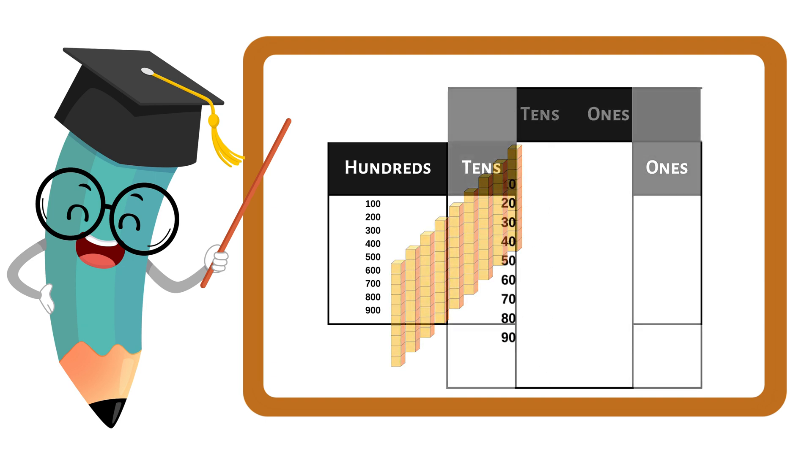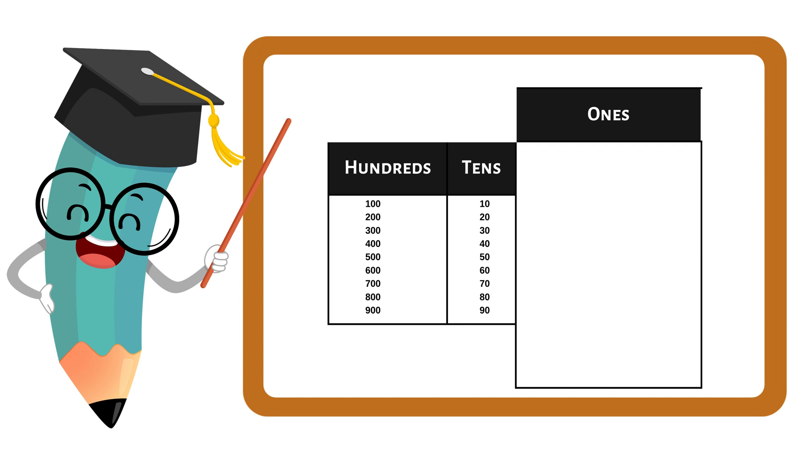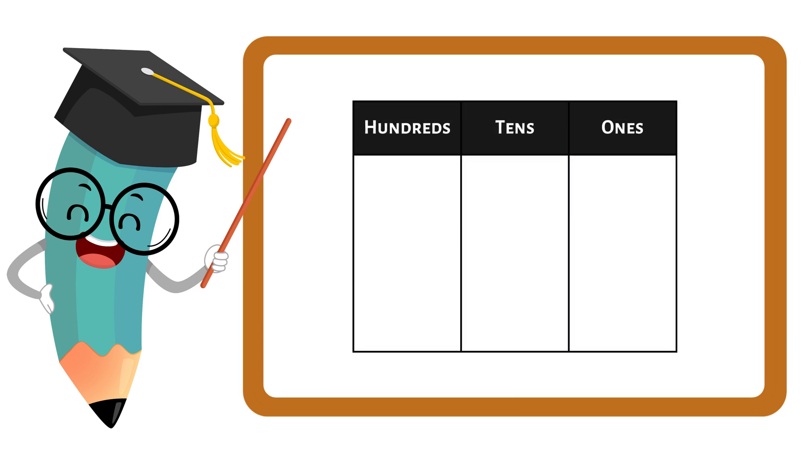Last but not least, we have the ones. They're like the little helpers, but they're super important. The digit in the ones place tells us how many individual ones we have. That's the basic idea of place value.